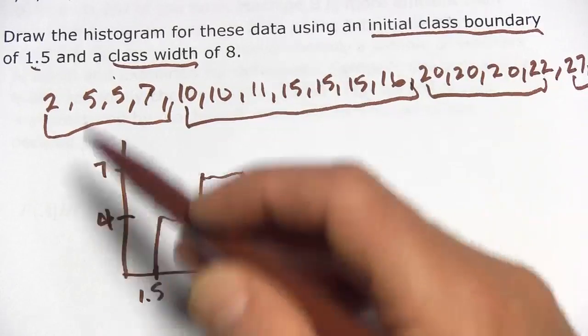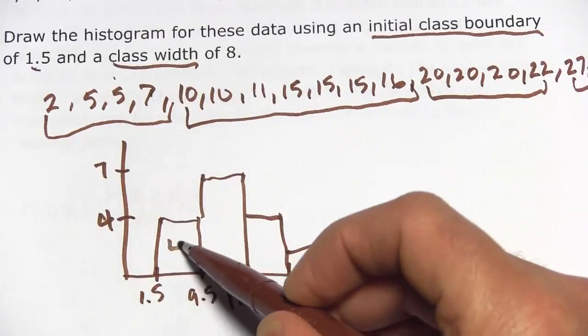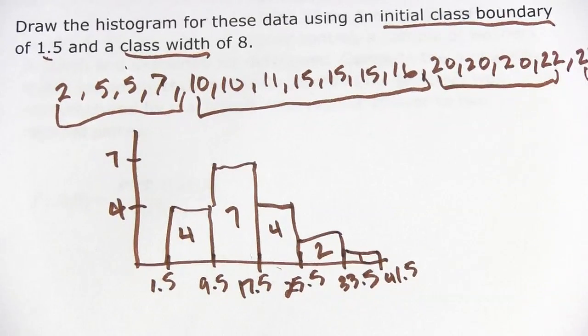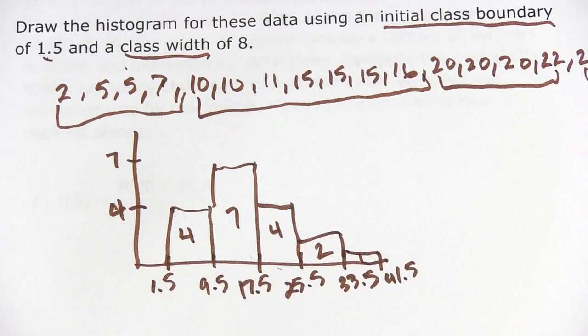So if we were going to write our frequencies of data points in here, it would be 4, 7, 4, 2, and 1. And that is how you make a histogram for grouped data.